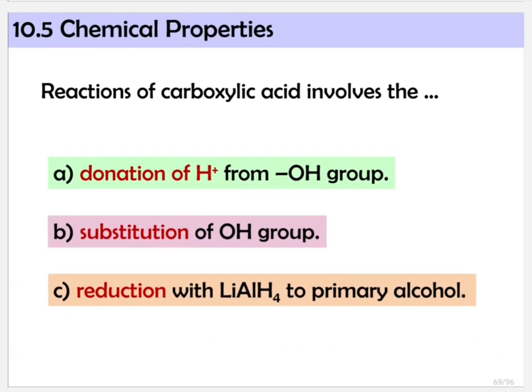So first we're going to go through the first learning outcome, where we're going to learn about 7 reactions involving carboxylic acid. From these 7 reactions, we can classify them into 3 parts. There are several reactions involving donation of H+ from the OH group — so for carboxylic acid RC double bond O-OH, what happens here is this hydrogen will break off.